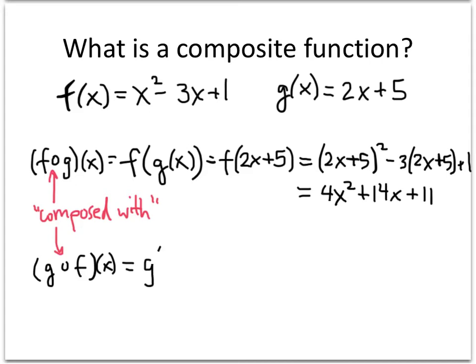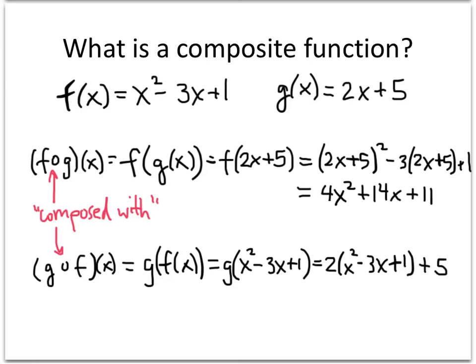Here we have g of f of x. That's g of f of x is x squared minus 3x plus 1. And so that's 2 times x squared minus 3x plus 1 plus 5. You might already be able to tell that this is not going to work out to be 4x squared plus 14x plus 11. In fact, when we work all this out, it works out to be 2x squared minus 6x plus 7.